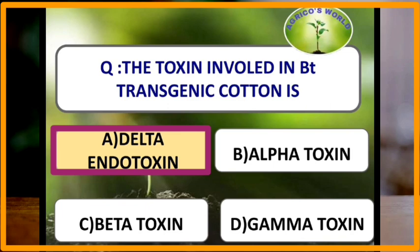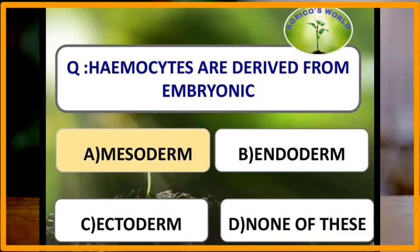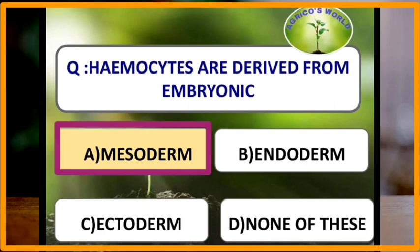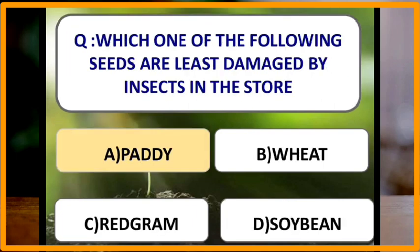The toxin involved in Bt transgenic cotton is delta-endotoxin. Delta-endotoxins are the insecticidal proteins that occur in parasporal bodies of Bt (Bacillus thuringiensis). Hemocytes are derived from embryonic mesoderm.